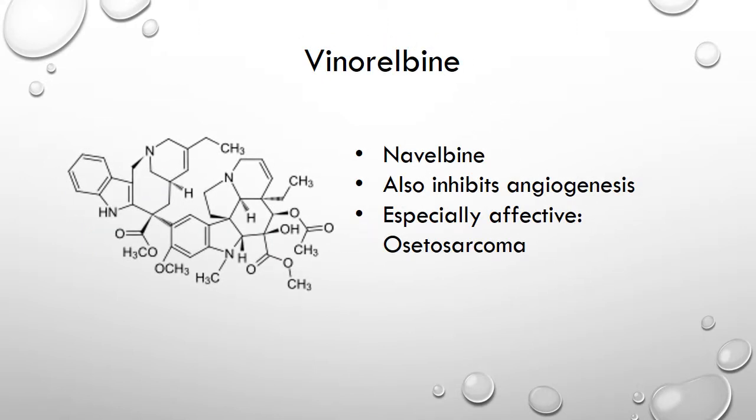Vinorelbine works like vinblastine to inhibit angiogenesis. It is especially beneficial in breast cancer and osteosarcomas, or bone tumor cells. Interestingly, it has also shown to decrease lipid bilayer stability. The side effects are a decrease in infection resistance, bruising or bleeding, anemia, and peripheral neuropathy.